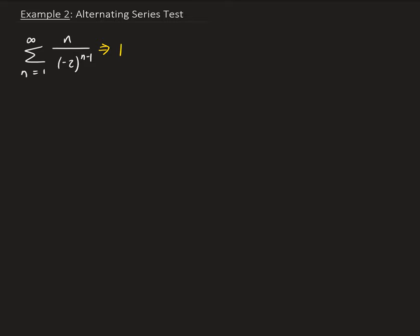The next one is for n equals 2. When n is 2, we get 2 on top, and then we get minus 1 to the first power, so that's going to give us minus 1. When n is 3, we're going to get 3 on top, and on the bottom we're going to get minus 2 to the second power, so that's going to give us 4. Therefore, we get 3 fourths.